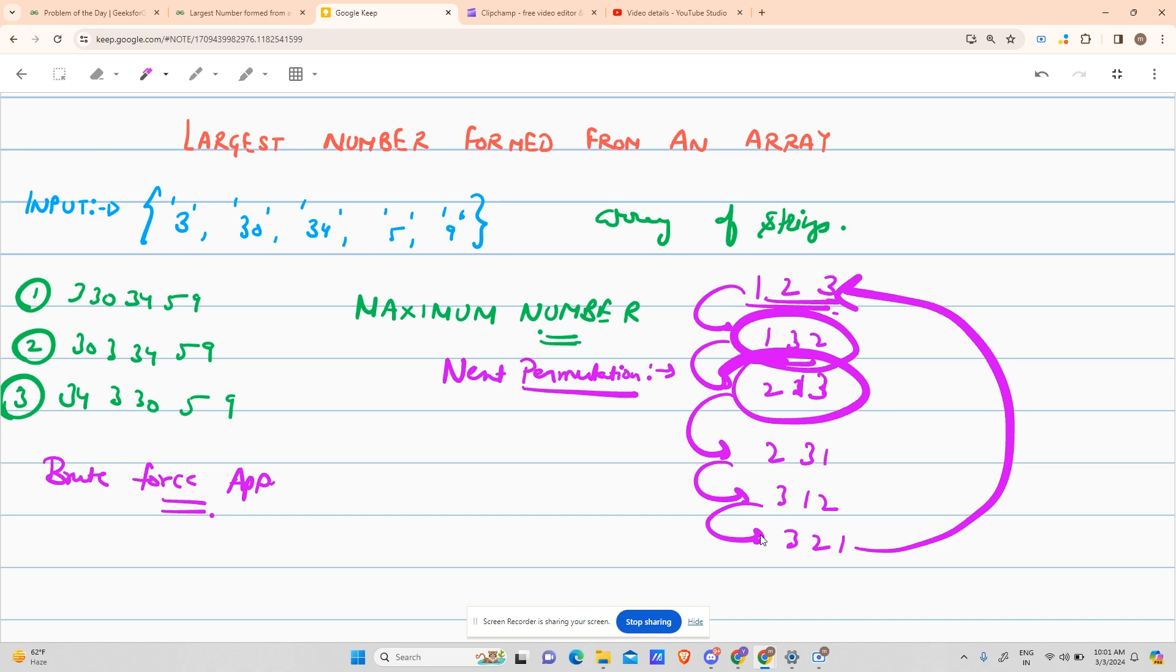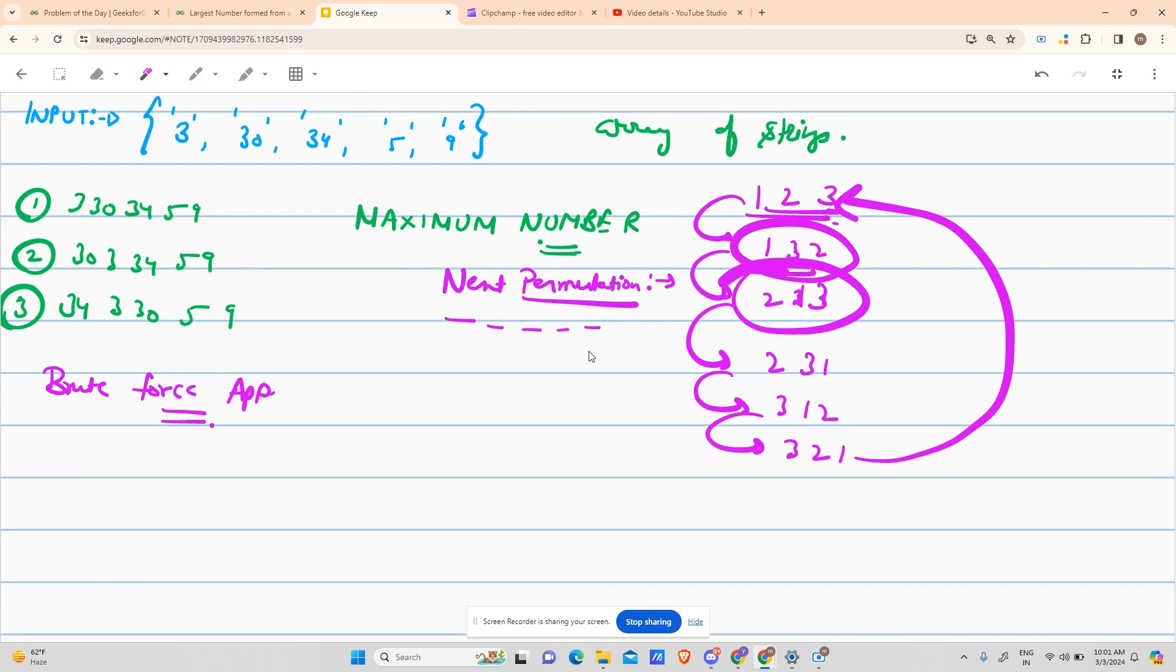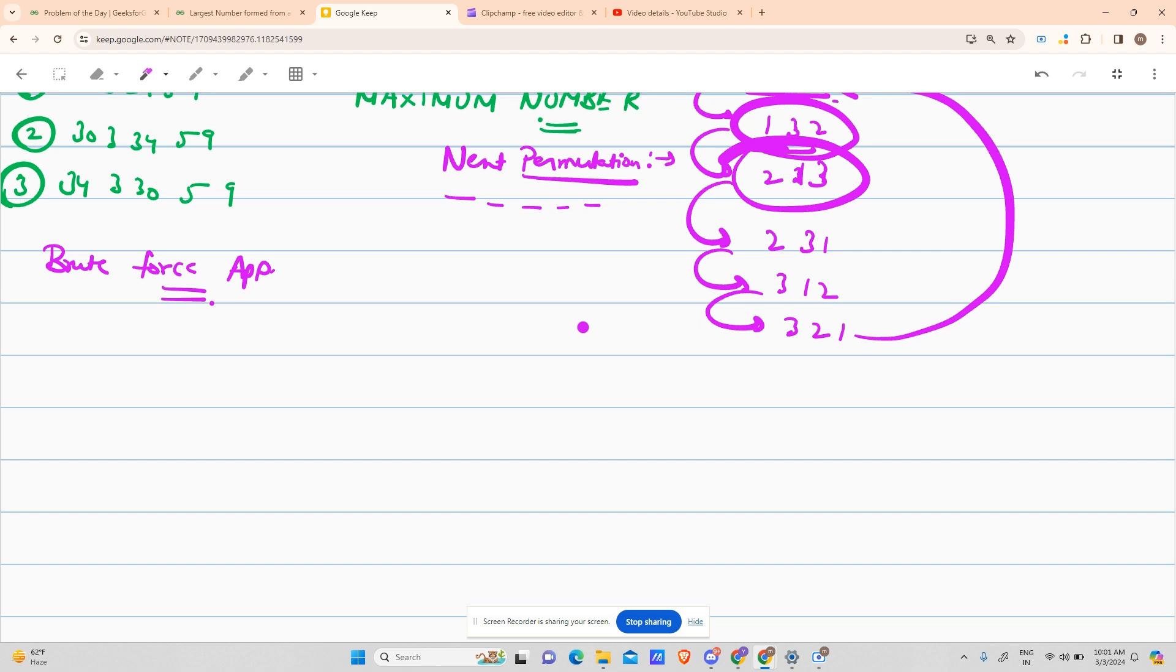So how can we use this algorithm in our approach? First of all, if you do not know about next permutation and how to solve it, I have already uploaded a video. I will provide the link in the description. Please go and watch it. So we will use the brute force approach.